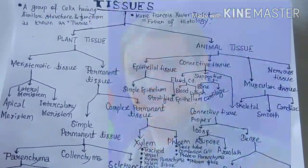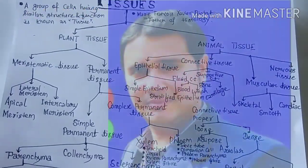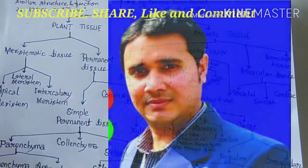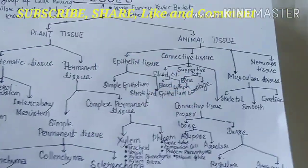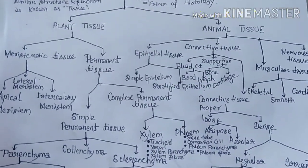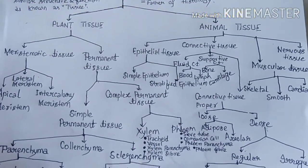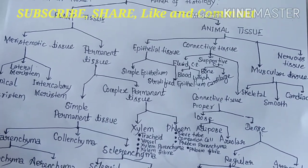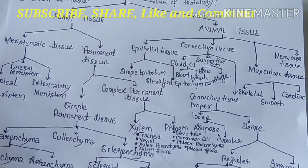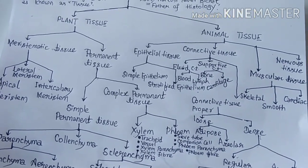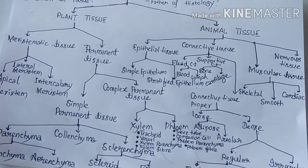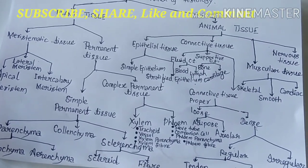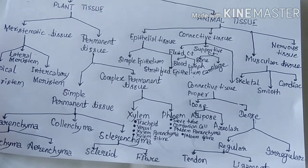Epithelial tissue — 'epi' means upper or outer, and 'thelial' means layer. In the animal body, the group of outer covering cells is called epithelial tissue. It can be defined as: a group of outer covering cells having similar structure and function is known as epithelial tissue.